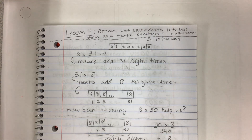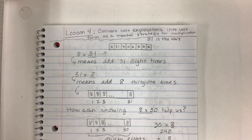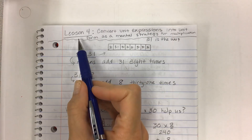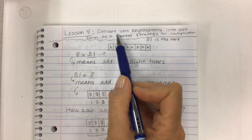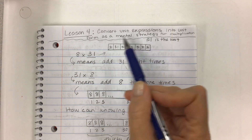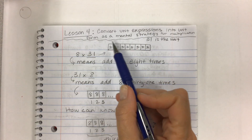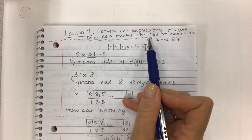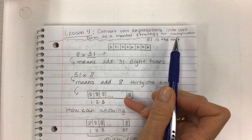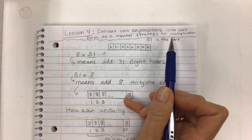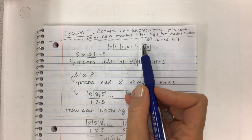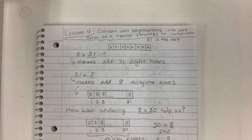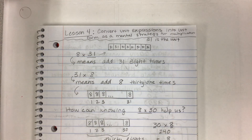Okay kids, here we go. Lesson four in module two is about converting unit expressions into unit form as a mental strategy for multiplication. When they say mental strategy, they mean please try to solve this in your head.